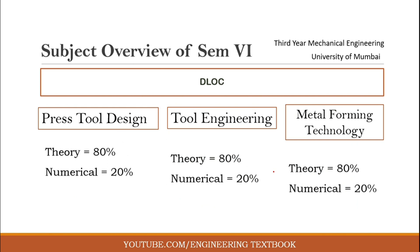The last subject is DLOC — Department Level Optional Course. As mentioned, there are three courses and you select any one: Press Tool Design, Tool Engineering, or Metal Forming Technology. Press Tool Design has 80 percent theory and 20 percent numerical. Tool Engineering also has 80 percent theory. Metal Forming Technology equally has 80 percent theory and 20 percent numerical.